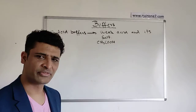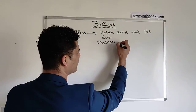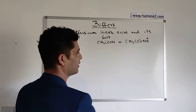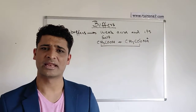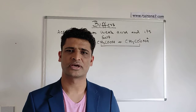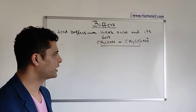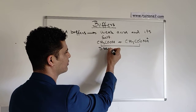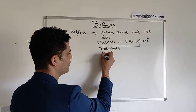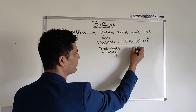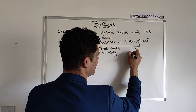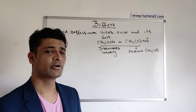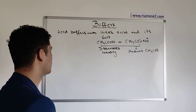Ethanoic acid is a good example. Ethanoic acid combined with a salt — CH₃COONa — this combination will actually minimize the effect of the change in pH during the chemical reaction. The ethanoic acid will dissociate weakly, whereas the salt produces acetate ion, or ethanoate ion, in the solution.